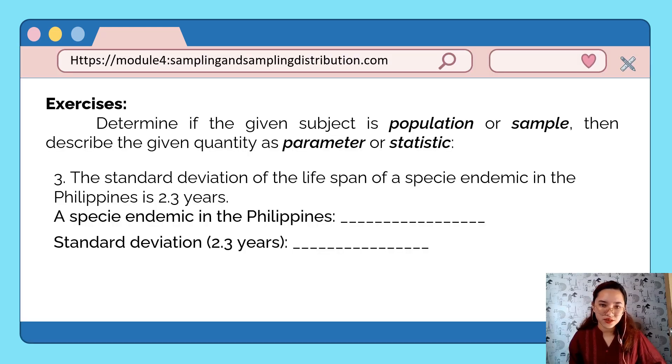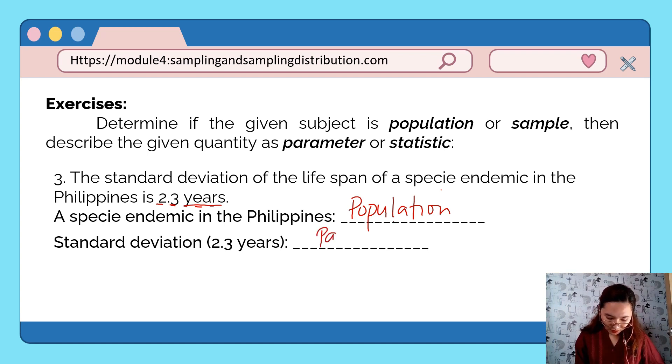Next, the standard deviation of the lifespan of a species endemic in the Philippines is 2.3 years. A species endemic in the Philippines - it's talking about the whole Philippines, therefore automatically that is our population. Of course, the 2.3 years describes our population, so this is a parameter.